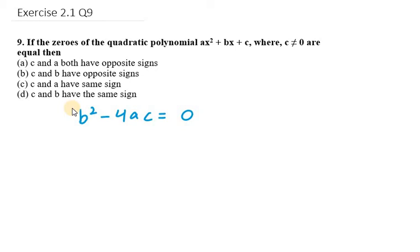So b² - 4ac = 0, that means b² = 4ac. So b² is always positive. Whenever if you take minus sign, if I take -1 whole square it will be 1 only. If I take 1 square it will be 1 only, so this term is going to be positive always.